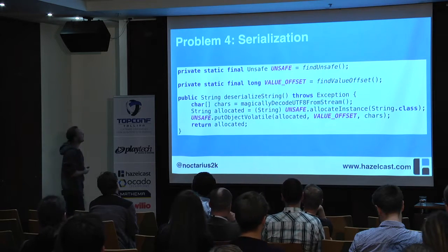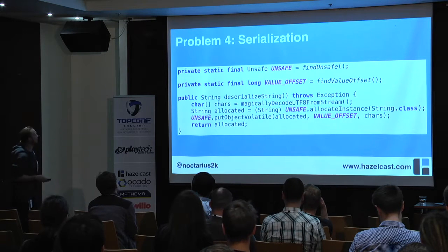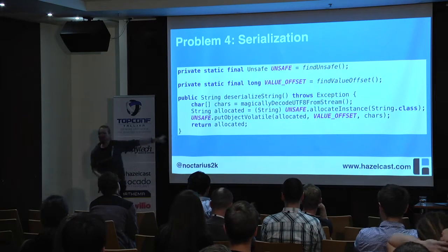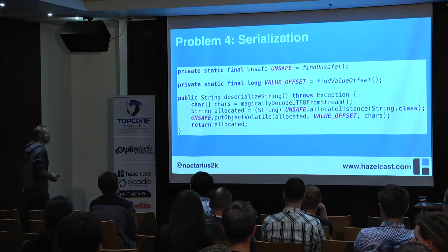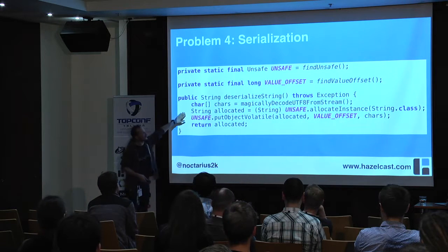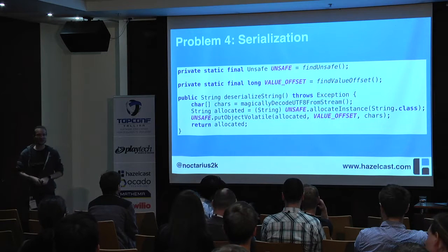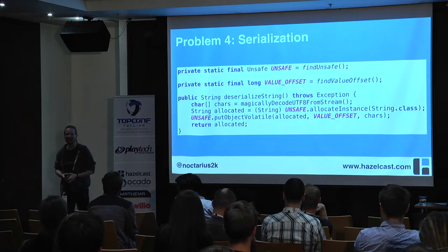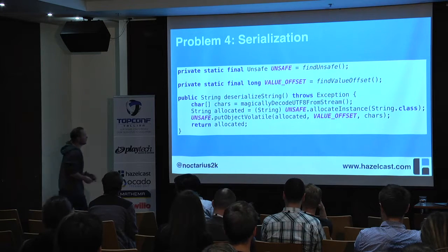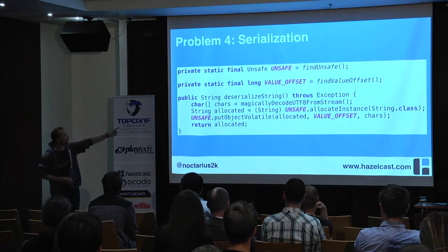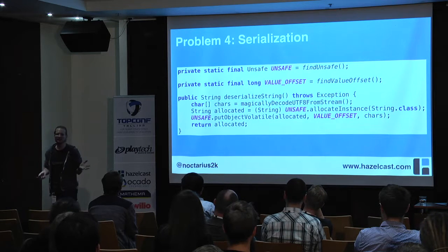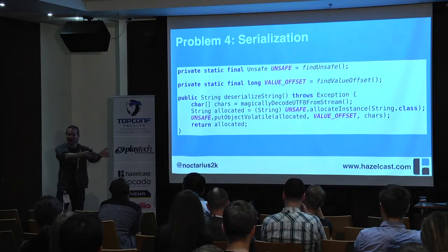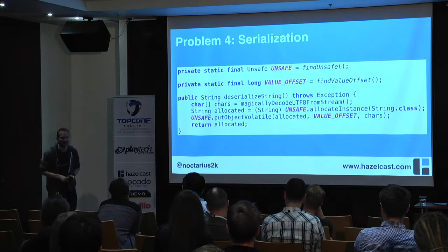We need to speed up. Deserialization: we magically deserialize a char array from a stream, allocate a String instance using Unsafe — which doesn't call any constructor, it just creates a String-like memory position — and then put in some chars. Why? There is a String constructor taking a char array, but the problem in Java is arrays are not immutable. So what happens is it copies the char array, making a defensive copy to ensure String immutability. For our use case, do we need this defensive copy? No, so we skip copying.